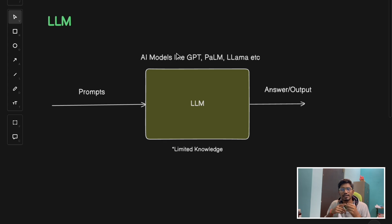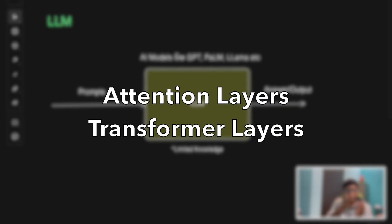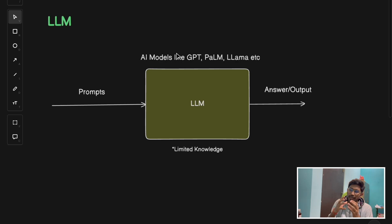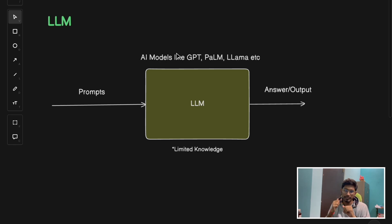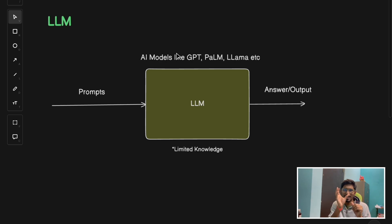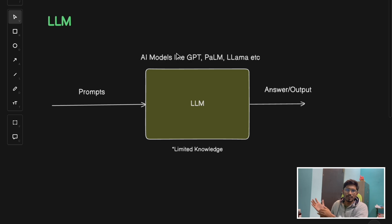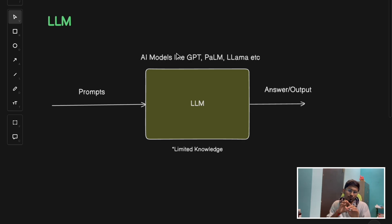LLM has multiple internal layers like attention layers and transformer layers, which make up the entire architecture of LLM. Maybe we will require a different video to explain the internal architecture of LLM - I'll create a separate video for that. But for now, on a high-level overview, you can think of LLM as a black box AI model which knows what the best possible next word is for a given series of words with semantic meaning. It's not like you throw a random series of words and it will predict the next word.